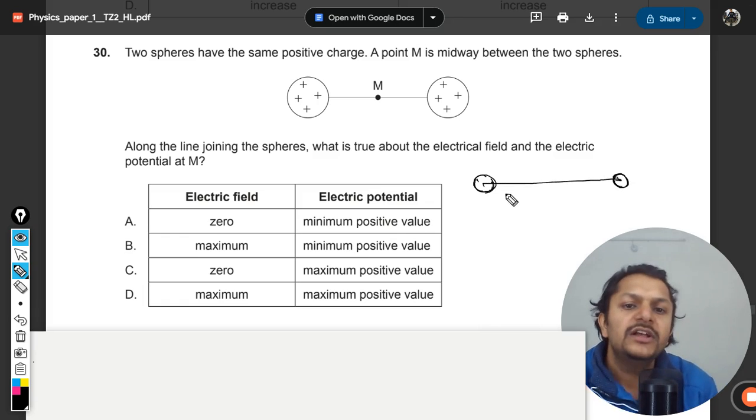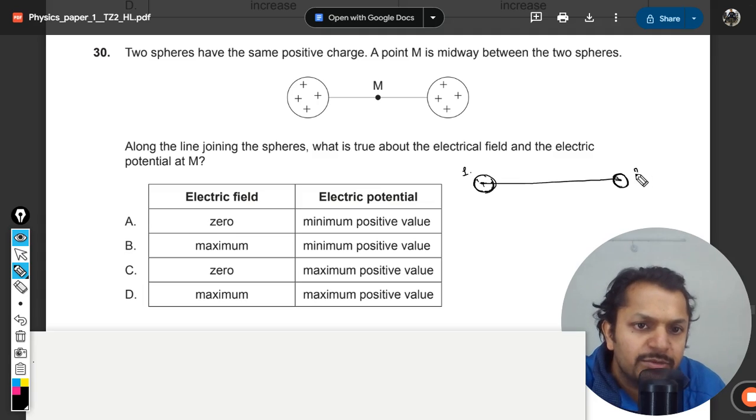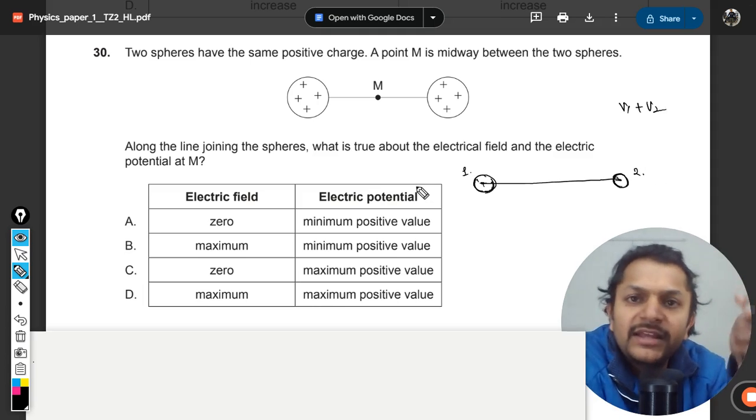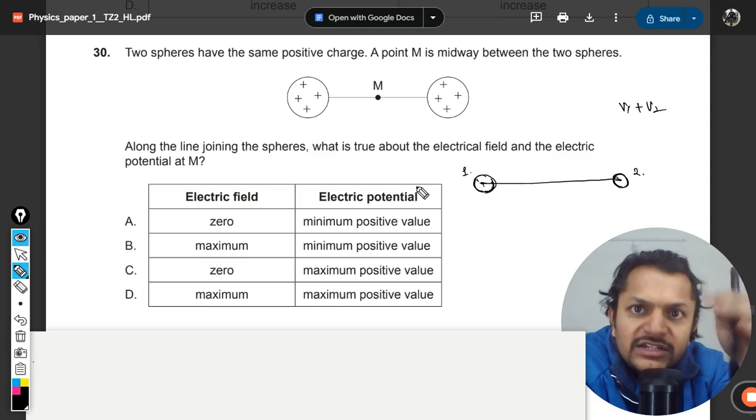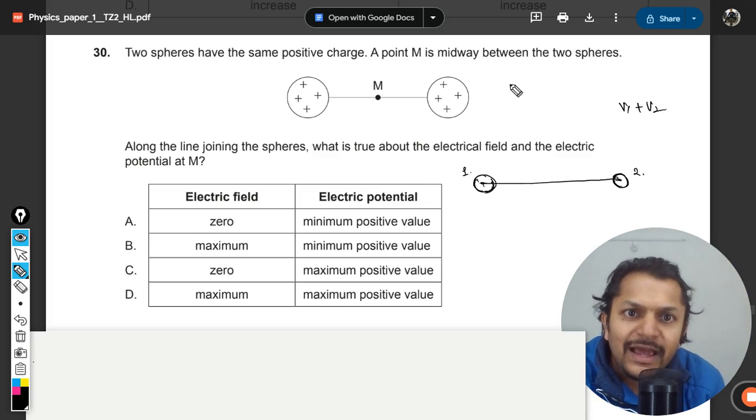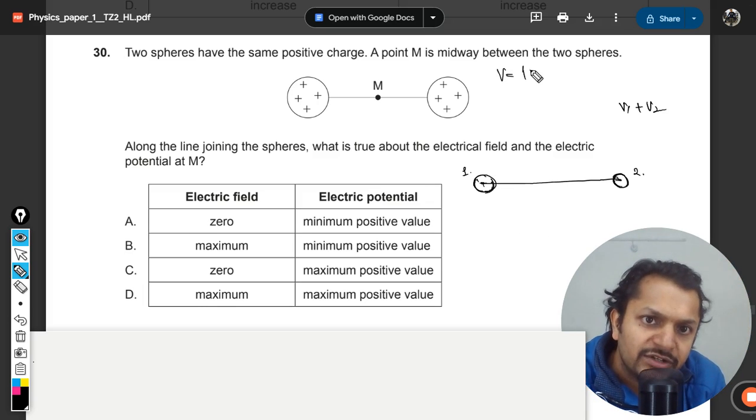This is the distance. Midway at any point, you first find the potential because of one, then you find the potential because of two, then you add them and find the total potential. This is the physics in this.